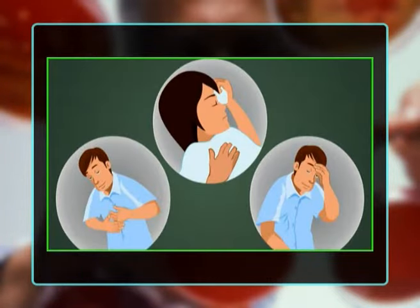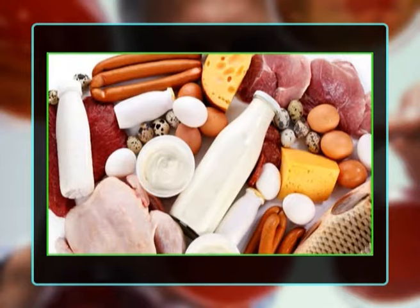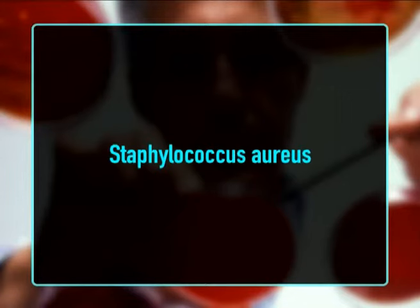Salmonella symptoms include acute watery diarrhea accompanied by nausea, cramps, and fever; blood in stools may occur. Animals are the main reservoir and transmission occurs by ingestion of contaminated products — especially poultry, meat, eggs, and milk. Salmonella typhi and paratyphi cause typhoid fever and paratyphoid fever respectively; since the reservoir for both are usually humans, transmission occurs mainly through person-to-person contact or contamination of food by food handlers.